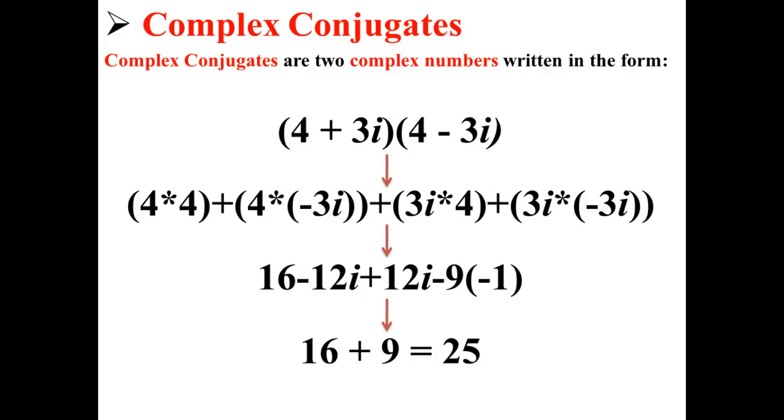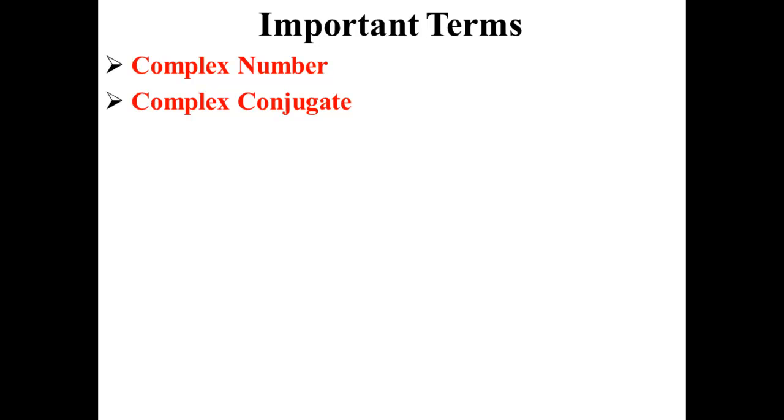As you can see, multiplying the complex conjugates allowed us to remove the imaginary number and get a single answer, a single whole number, 25, as our final answer. Thank you.